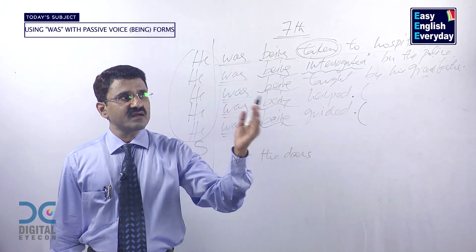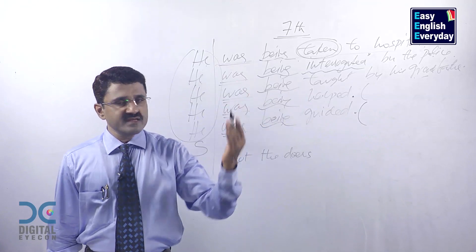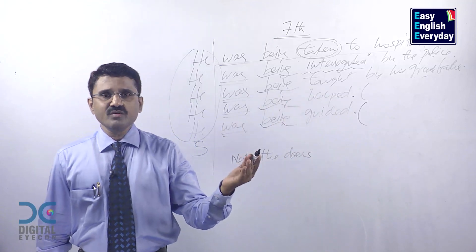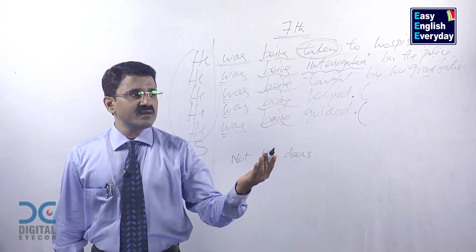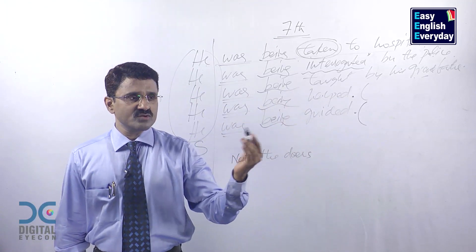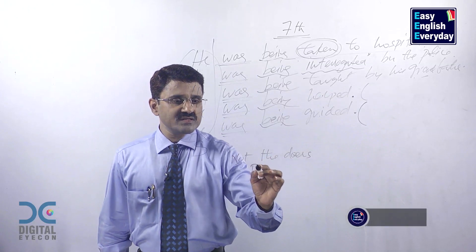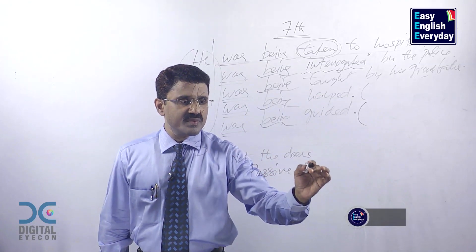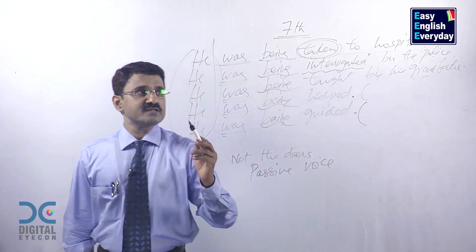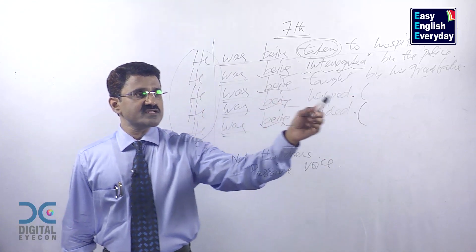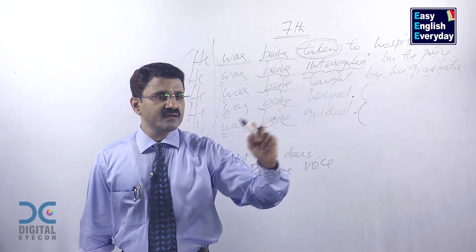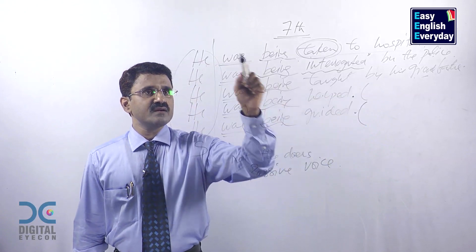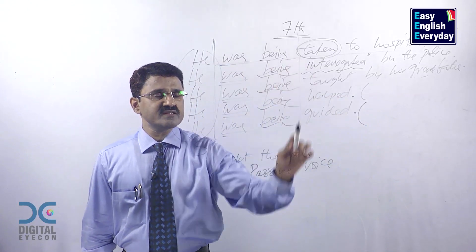The doers are unimportant, insignificant. You can hide the doer, ignore the doer, or give less importance to the doer. These are called passive voice sentences — past continuous passive voice sentences. He was being helped by somebody. He was being guided by his mother. In this way you can make sentences.